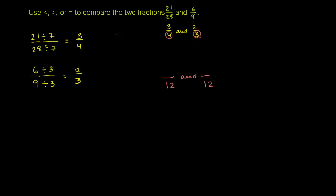Another way to think about it: the prime factorization of 4 is 2 times 2, and 3 is already a prime number. A number with all the prime factors of 4 and 3 needs one 2, another 2, and a 3. So 2 times 2 times 3 is 12. That's how you get the least common multiple — the common denominator for 4 and 3.